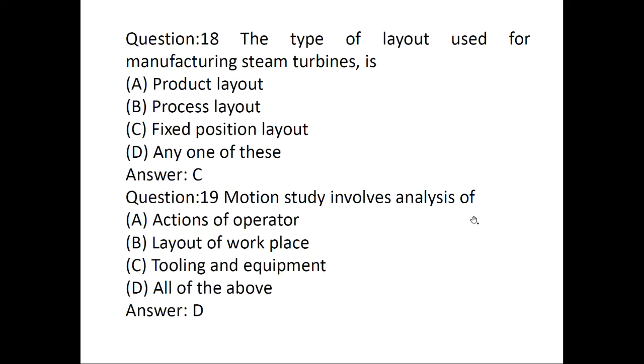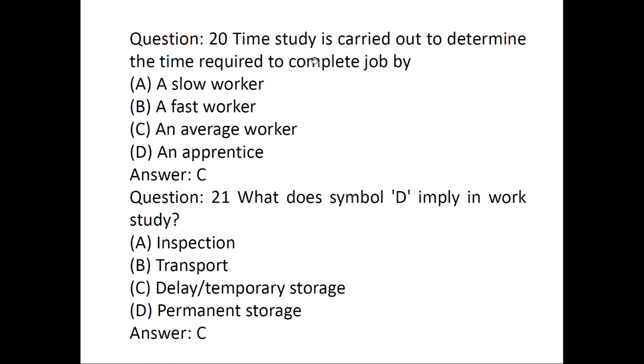Motion study involves analysis of action of operator, layout of workplace, tooling and equipment. This is all the motion study involved in analysis. The answer is all of the above. Time study is carried out to determine the time required to complete the job for slow worker, fast worker, average worker, or apprentice. This is the answer, average worker.